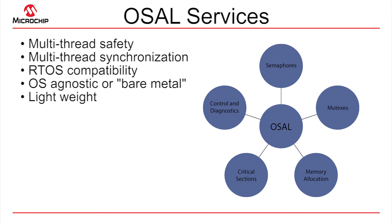To do that, Harmony libraries utilize a minimalistic set of OS features that almost any RTOS is going to provide. It uses semaphores to synchronize between threads, and mutexes and critical sections to protect those shared resources. The OSAL provides a consistent set of functions — a consistent API or interface — for the Harmony libraries to call in order to access those services.